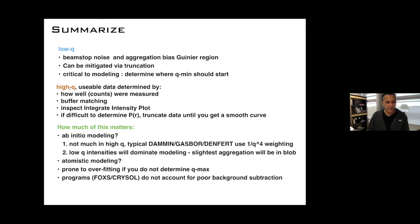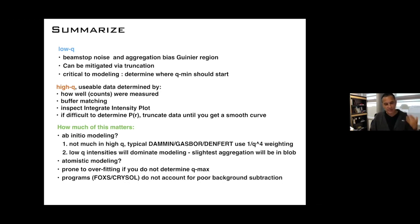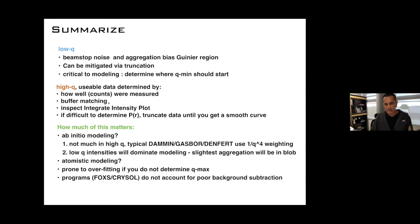For high-q data, the usable range is determined by how well the counts are measured. Very few counts are measured at the highest q, so if you need that information you'll have to extend exposure time but you'll be prone to radiation damage. The quality of buffer matching also affects high-q. Doing SEC-SAXS nearly guarantees a perfect match, so maybe do that instead of a batch experiment.